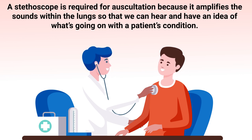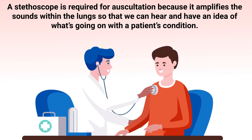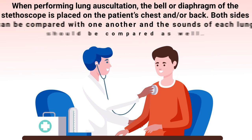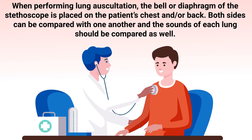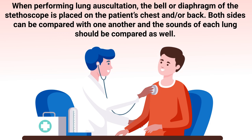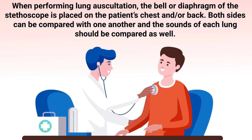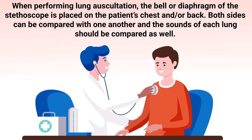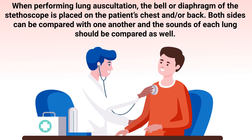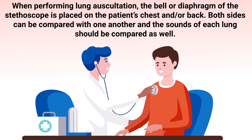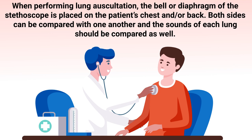A stethoscope is required for auscultation because it amplifies the sounds within the lungs so that we can hear and get an idea of what's going on with a patient's condition. When performing lung auscultation, the bell or diaphragm of the stethoscope is placed on the patient's chest and/or back, and both sides can be compared to one another.